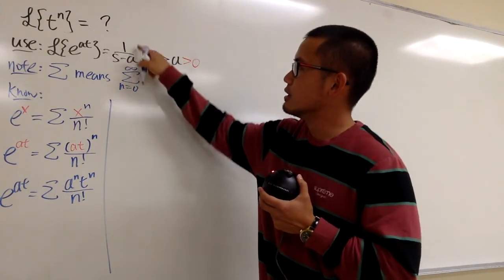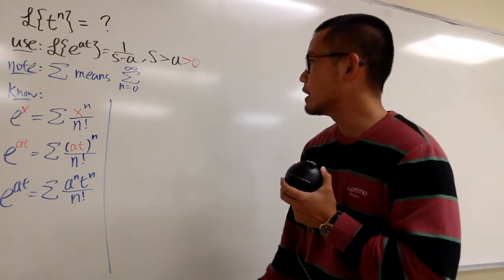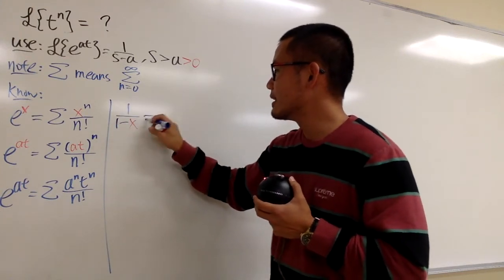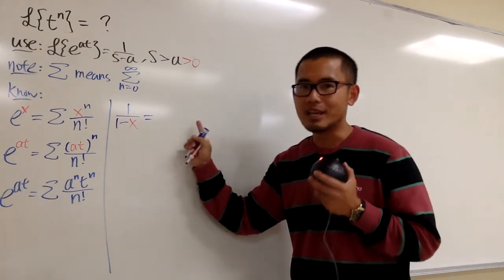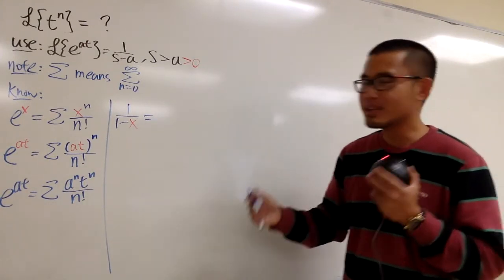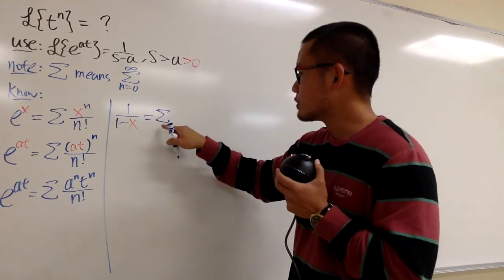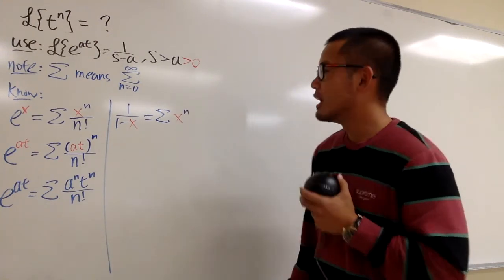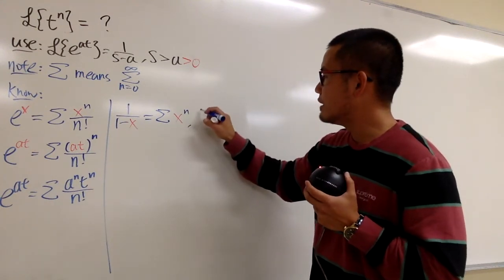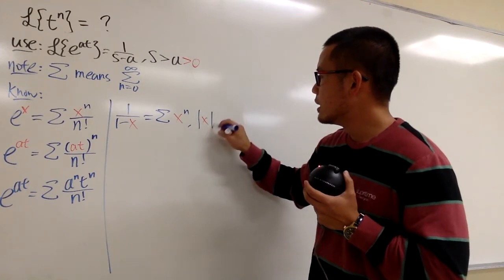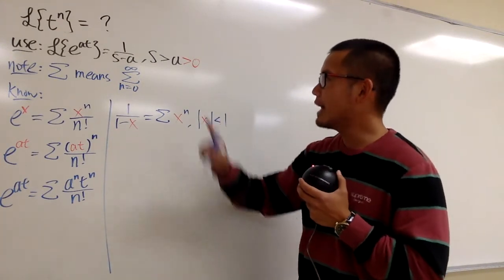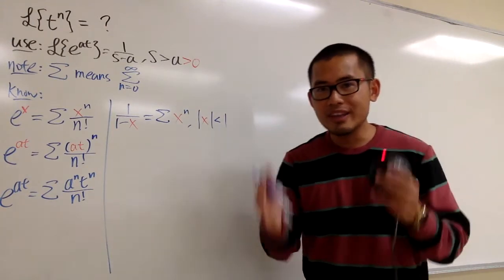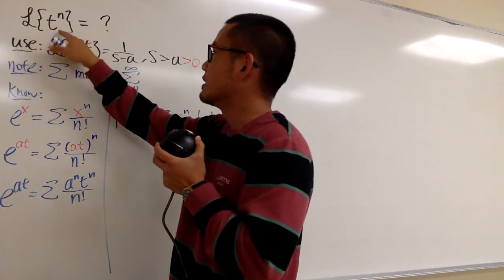Now I also want to write 1 over s minus a in terms of a series. I'll base it on the fact that 1 over 1 minus x equals the summation when n goes from 0 to infinity of x to the nth power. However, this is only true when the absolute value of x is less than 1. This is why I want to restrict a to be positive — to make my argument work cleanly.